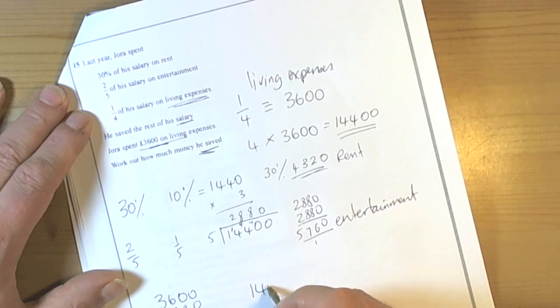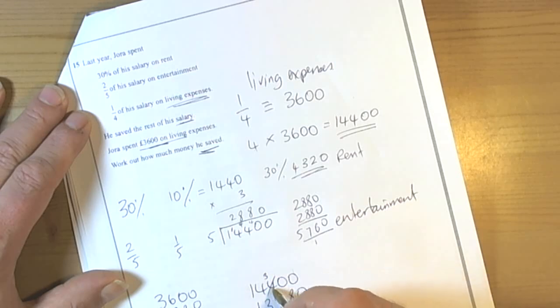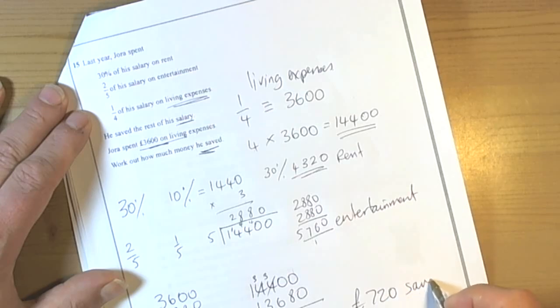So what have we got left to save? £14,400 take away £13,680. So 0, 0, need to borrow 100 from there, 10, 10, so 10 take away 8 is 2, 3. So borrow 1000 from there, so 1300 take away 600 is 700, 0, 0. So saved, £720.